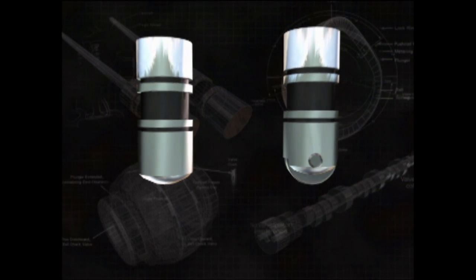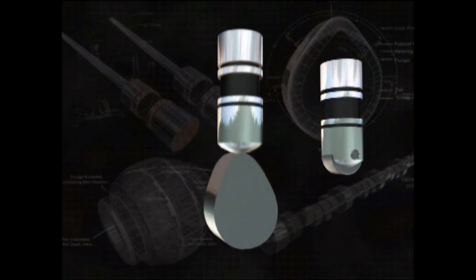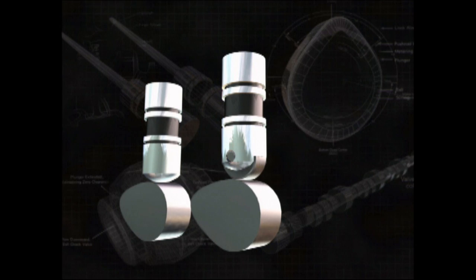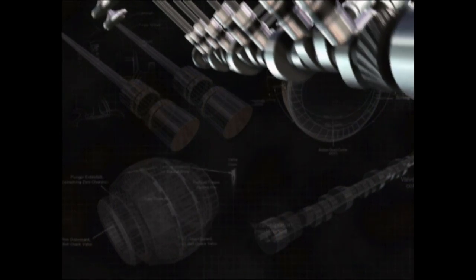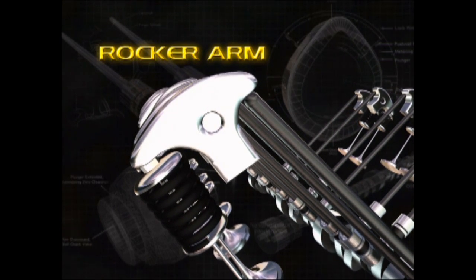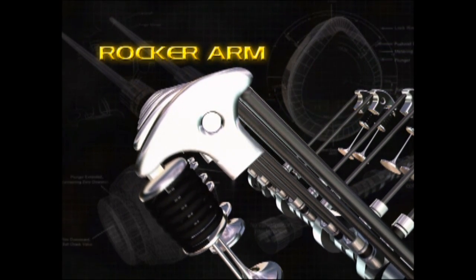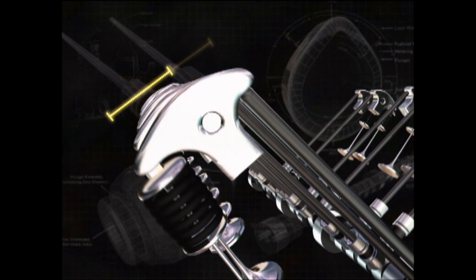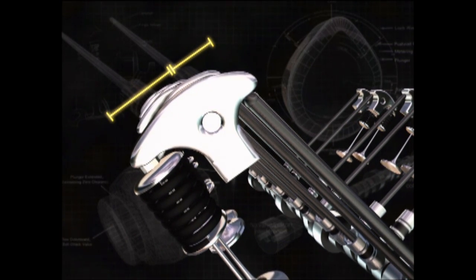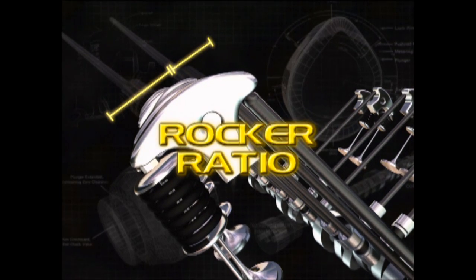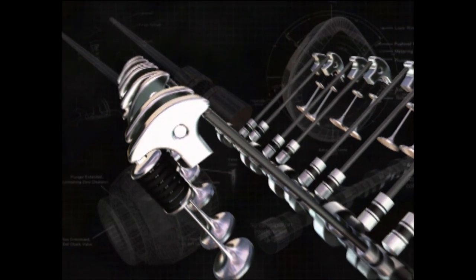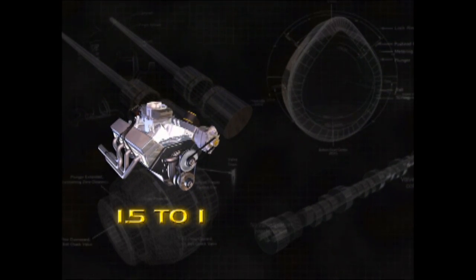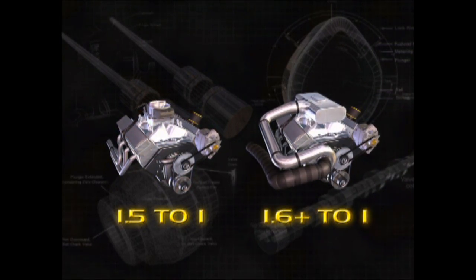Lifters also have two types of tips: flat and roller. A flat tip is slightly curved and slides along the cam lobe. A roller tip rolls along the profile of the lobe and reduces friction and wear. Another important player in the valve train is the rocker arm, which pivots to transfer motion from the pushrod to the valve stem. It also multiplies the movement because the valve stem side of the rocker is longer than the pushrod side. This difference is called the rocker ratio — on a stock engine it may be 1.5 to 1, while a performance engine may have a ratio of 1.6 or higher.